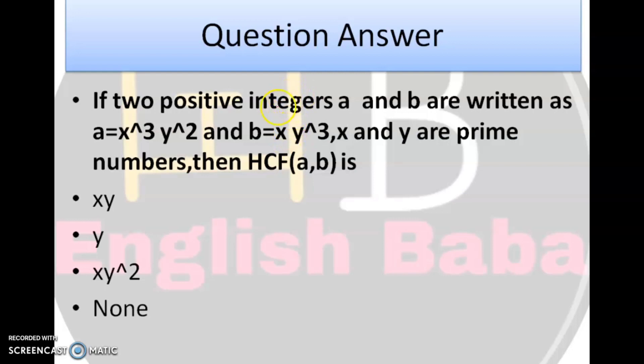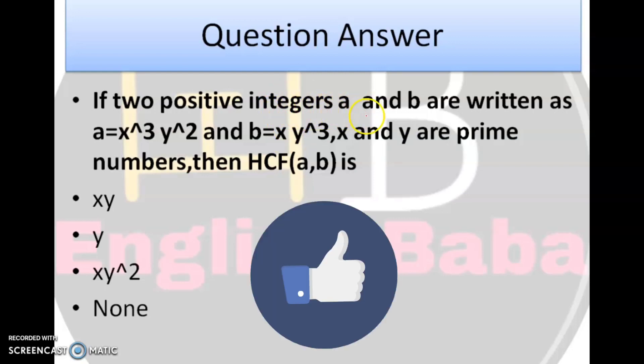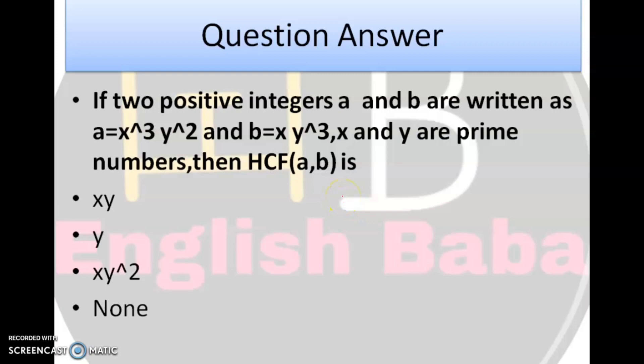Next question. If two positive integers A and B are written as a = x^3 y^2 and b = x y^3, x and y are prime numbers, then HCF. A humain given hai x^3 y^2, B humain given hai x y^3. Ab hamen highest common factor nikalna hai, x^3 y^2 aur x y^3 ka, your answer would be x y.